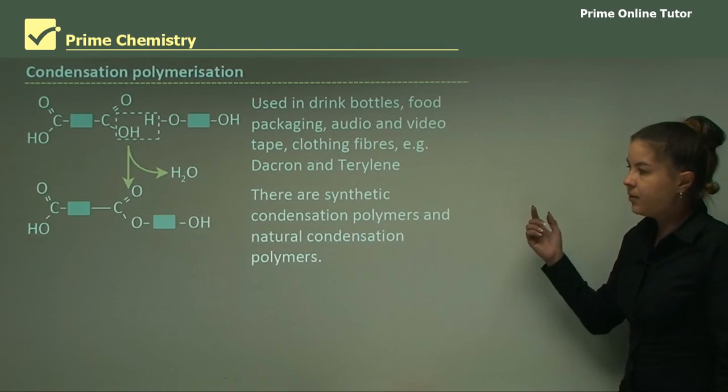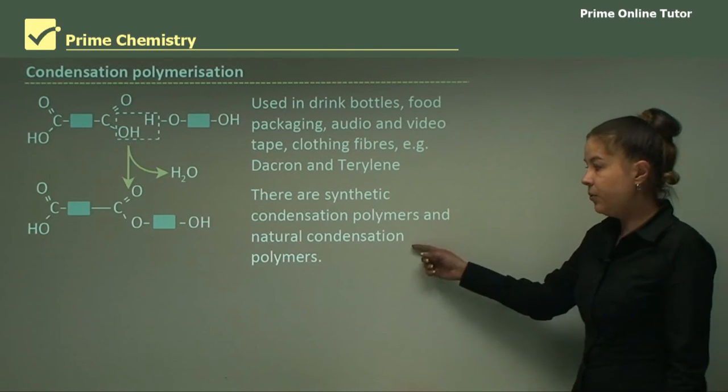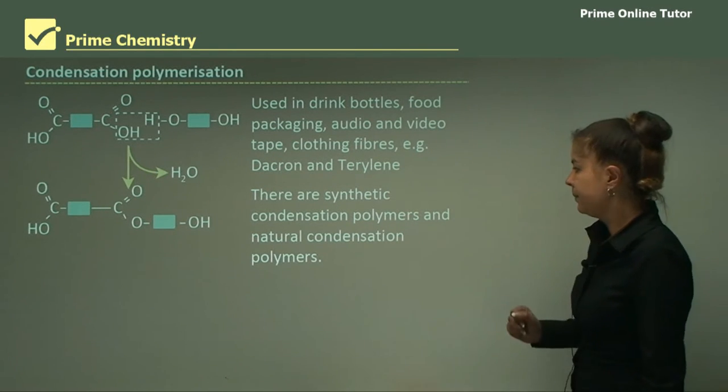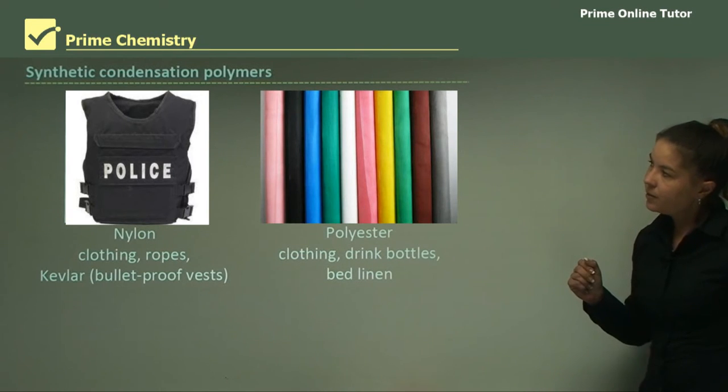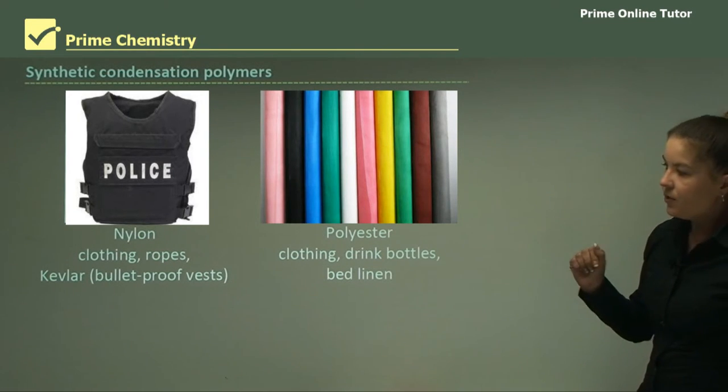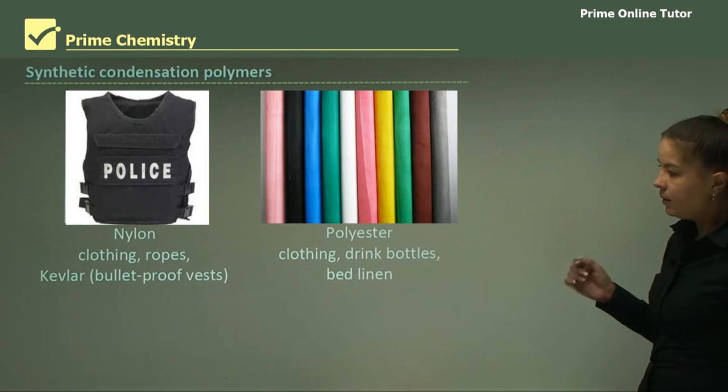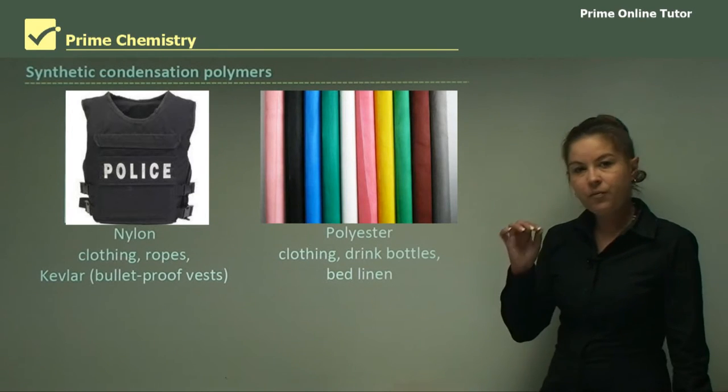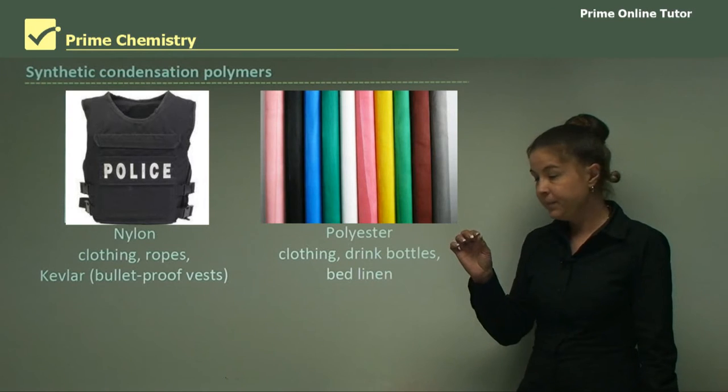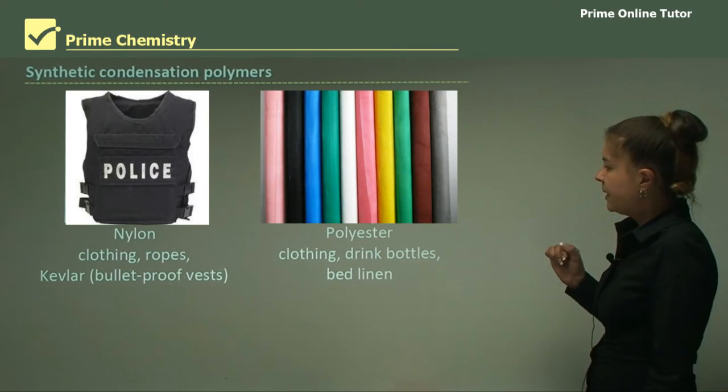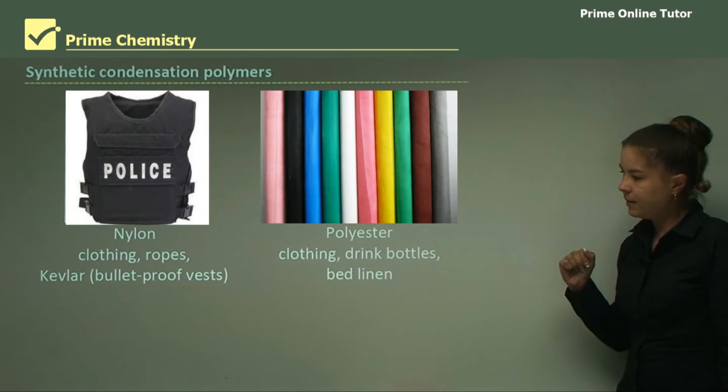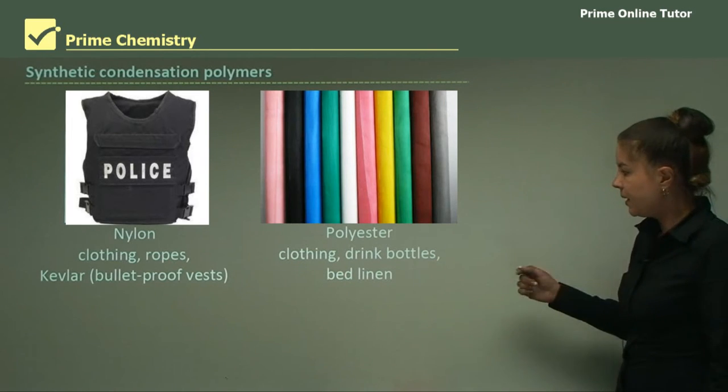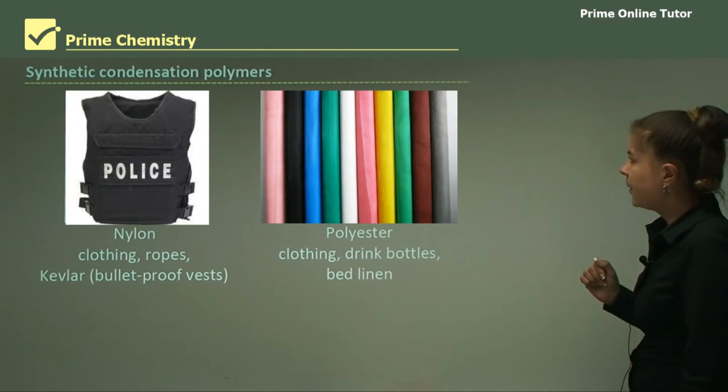With these polymers, there are synthetic condensation polymers and also natural condensation polymers. Synthetic condensation polymers, some examples: types of nylon include clothing, ropes, and Kevlar, which is used for bulletproof vests. It's a very long-chain polymer. Kevlar is very strong because it has strong hydrogen bonding. That's why they're used for bulletproof vests. Another type is polyester. Different types of polyester are also used for clothing, also drink bottles, and for bed linen. But some people are allergic to these fibers.